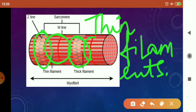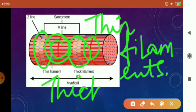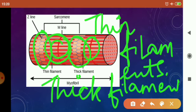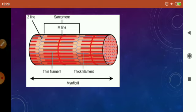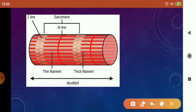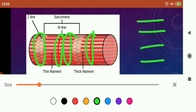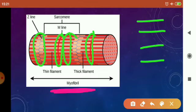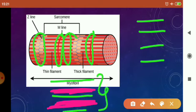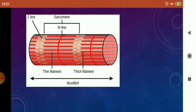The red thick lines are called thick filaments. There are areas where only thin filament is present, areas where both thin and thick filaments are present, and also an area where only thick filament is present. The area where only thin filament is present will appear lighter, whereas the area with both thin and thick filaments will appear darker.